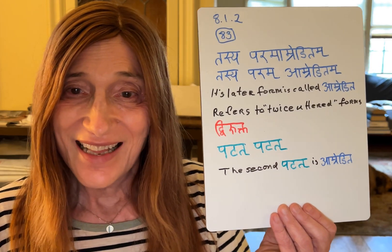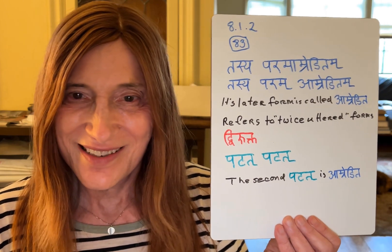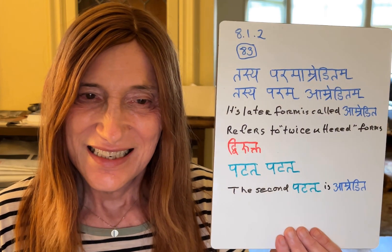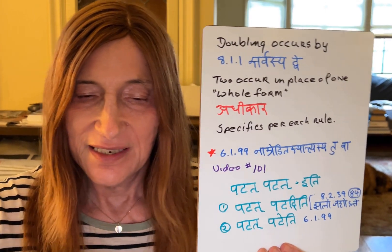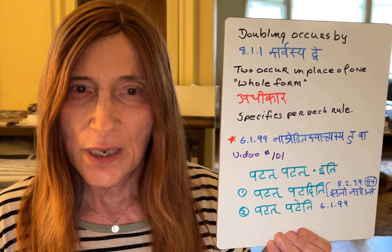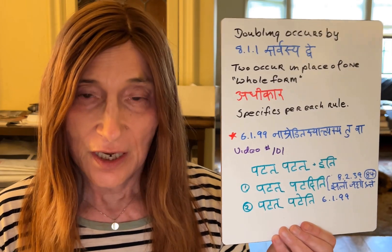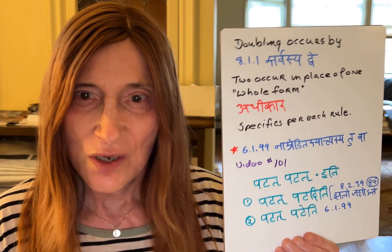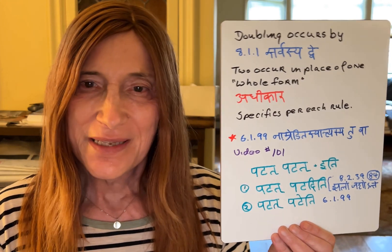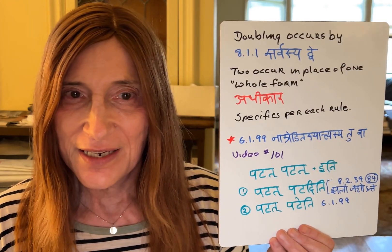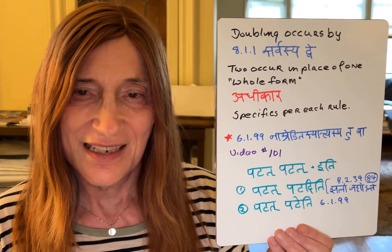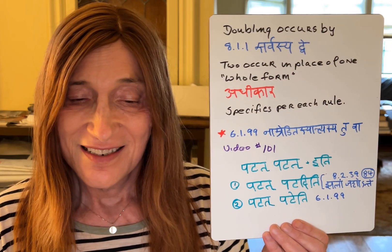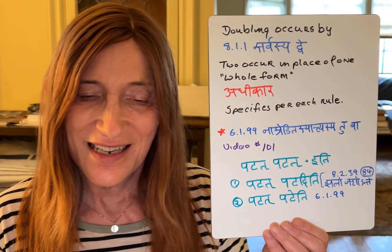That's what we would have learned if we had discussed sutra 8.1.1, which was not in my original notes. But it's not hard to find: 8.1.1 is 'sarvasya dve' — in place of one whole thing, two forms come. That's a little vague, but that's how adikata sutras are — they provide a general concept, and the specifics get filled in rule by rule.